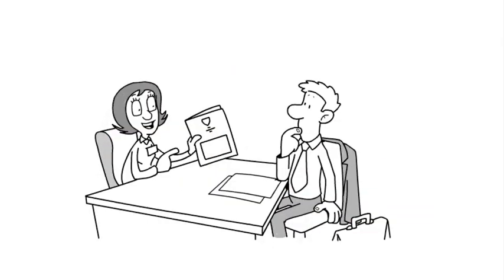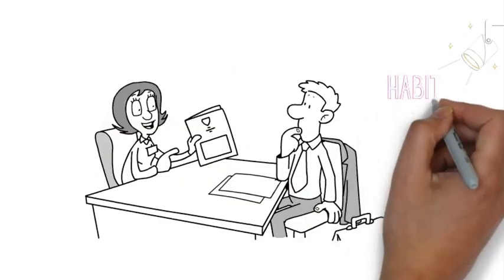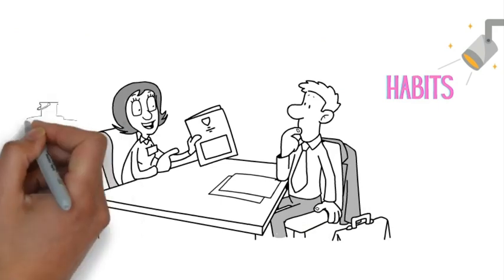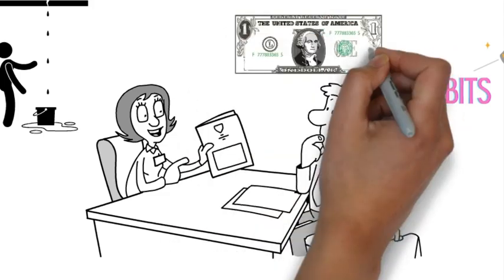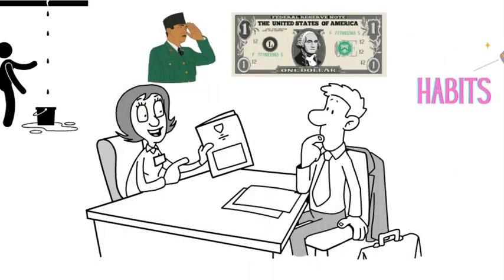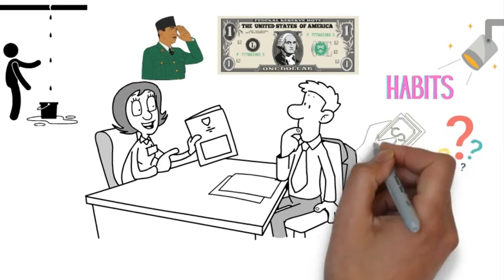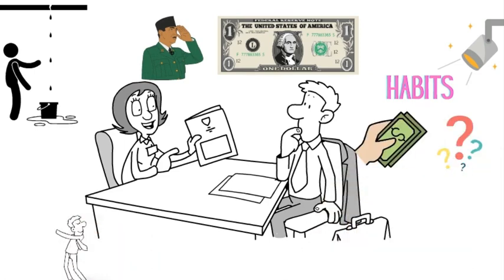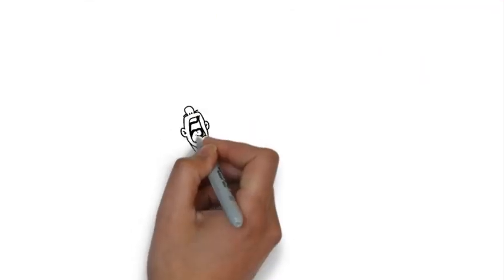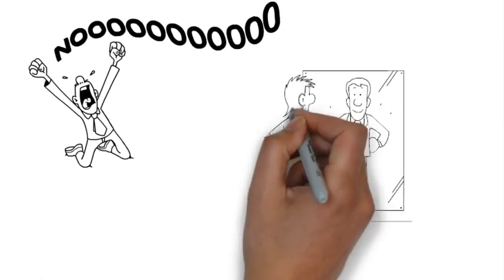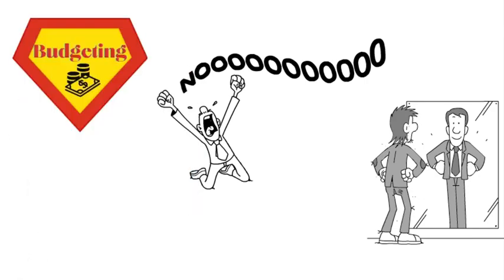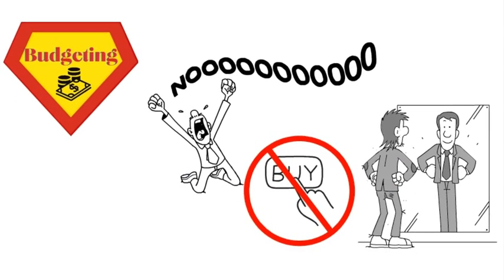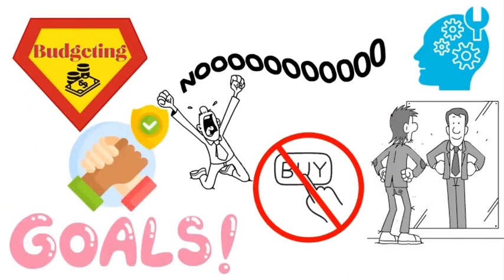Budgeting helps you dodge that bullet. It's like a financial spotlight that shines on your spending habits, revealing where those sneaky leaks are happening. Each dollar gets a job in your budget. No more wandering aimlessly. They're on a mission. And you know what's truly empowering? When you budget, you're taking control of your financial narrative. You're telling your money exactly where to go, and it's a game changer. So whether it's saying no to that impulse buy or finding smarter ways to cut costs, budgeting becomes your financial superhero. And hey, remember, this isn't about restricting yourself. It's about aligning your spending with your goals and values.